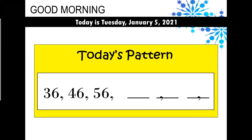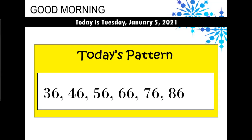This is our pattern. Our pattern is a little different than it has been. This pattern is not counting by ones — it's counting by 10s, but we're not starting with 10. So we're actually going to start with 36. So 36, 46, 56. What three numbers come next? Right. 66, 76, and 86.